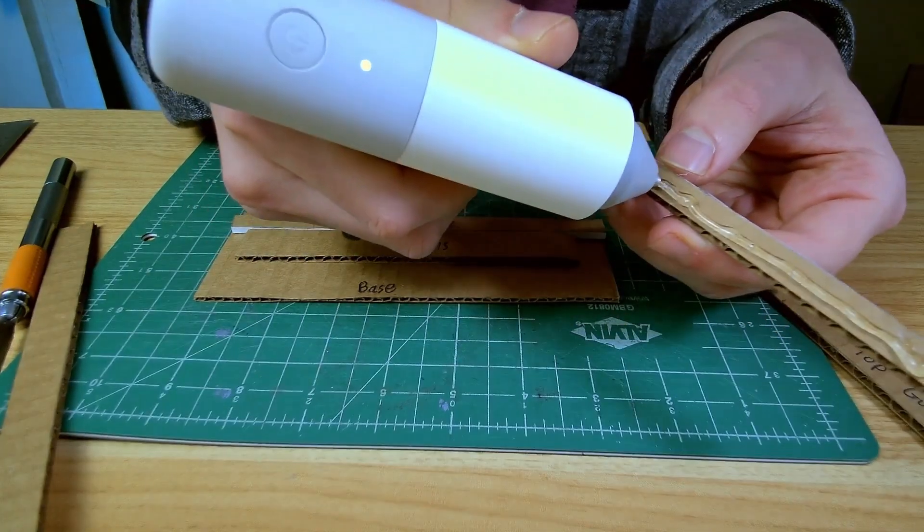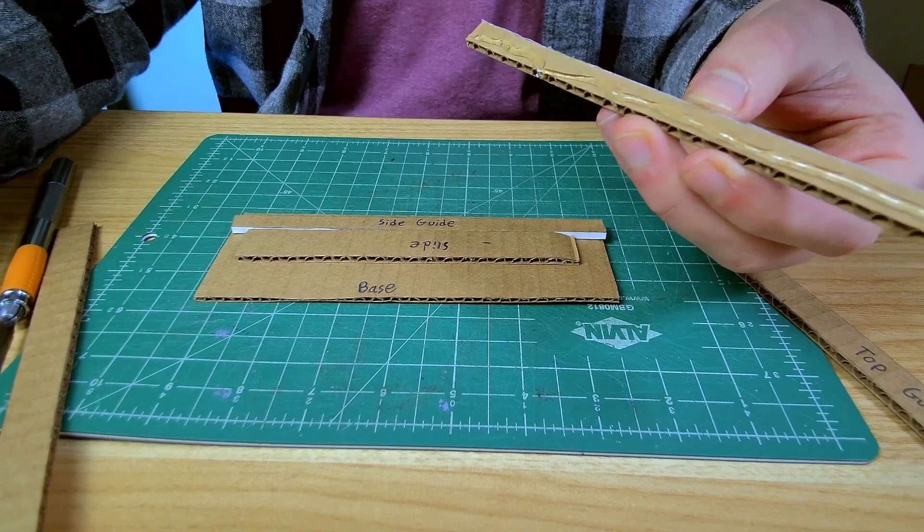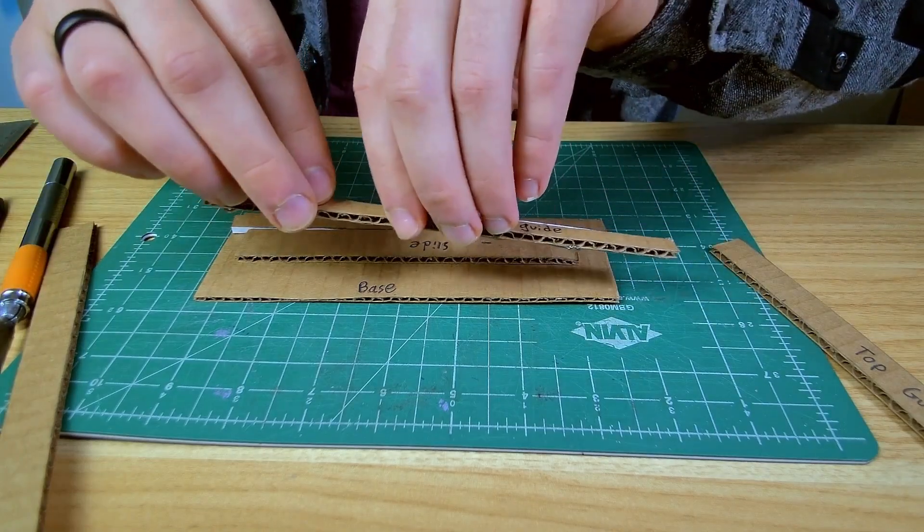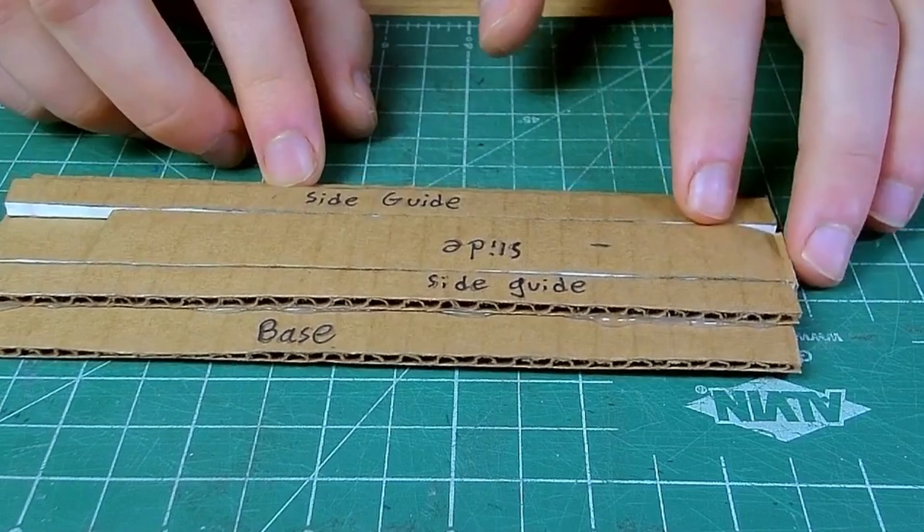As I glue this I'm going to try to offset it to the back again so that we don't get any overflow onto the actual slider. This is just slightly tighter than I intended but I think it'll work well enough.